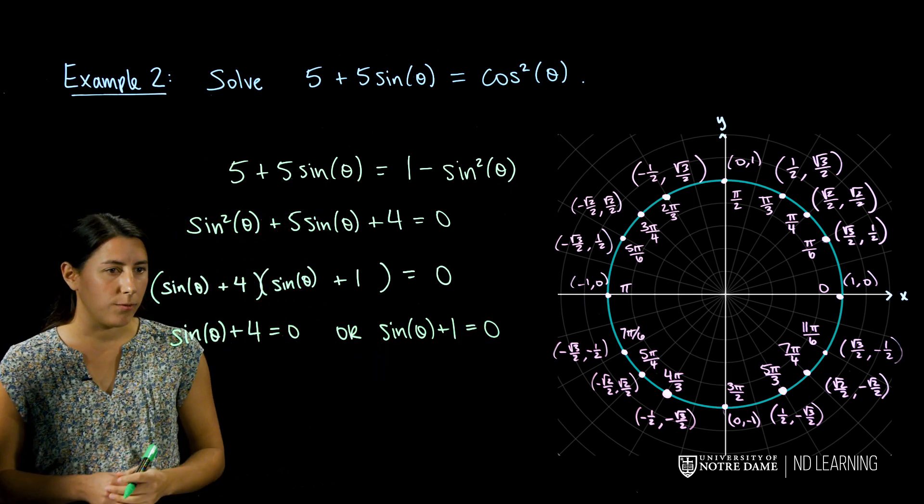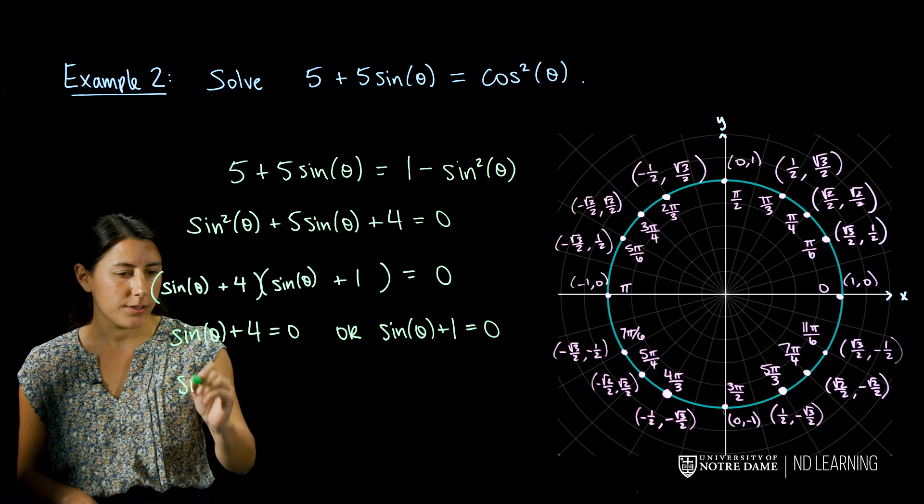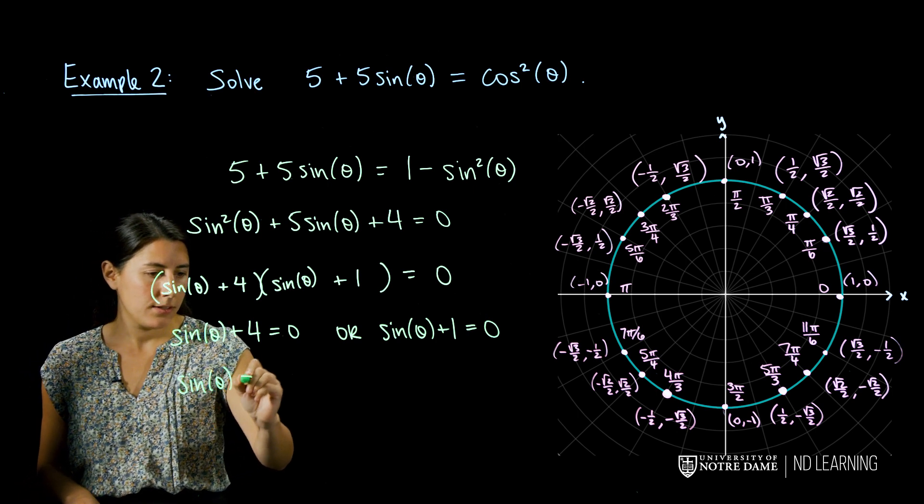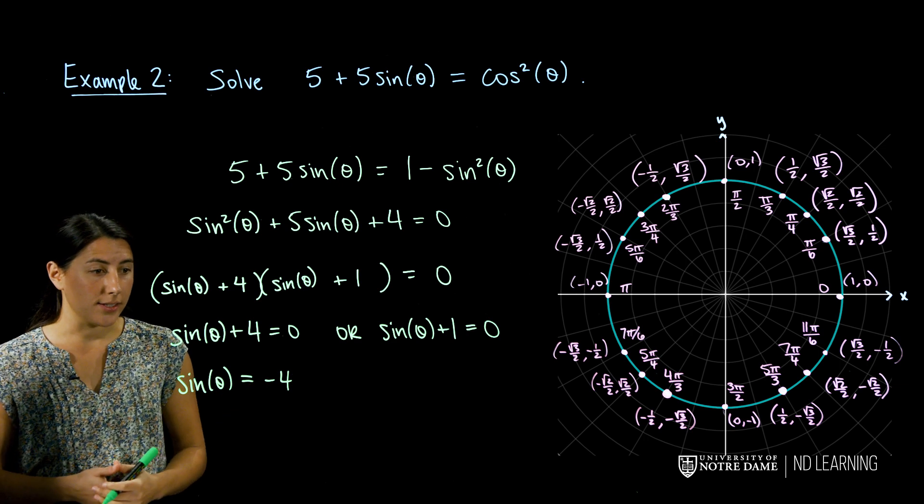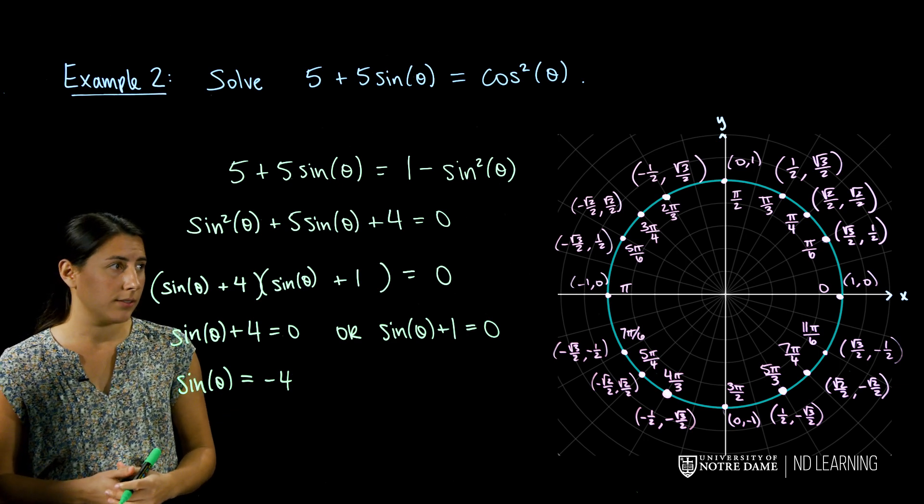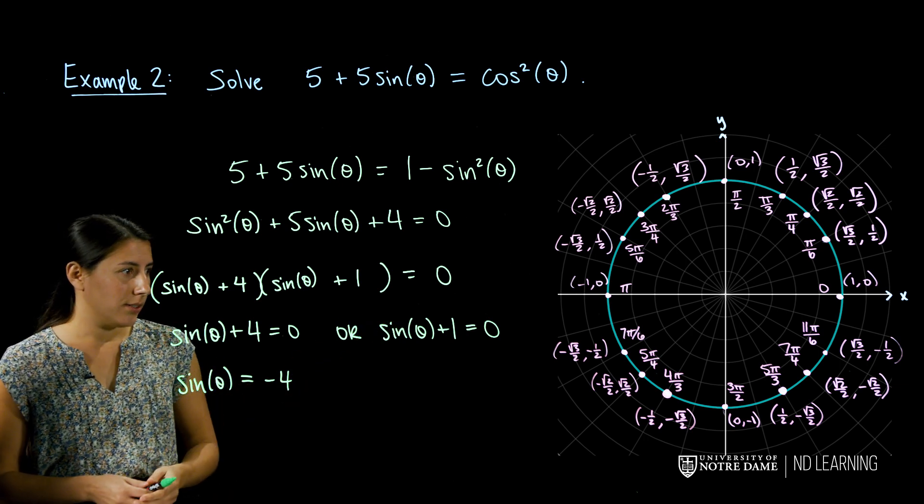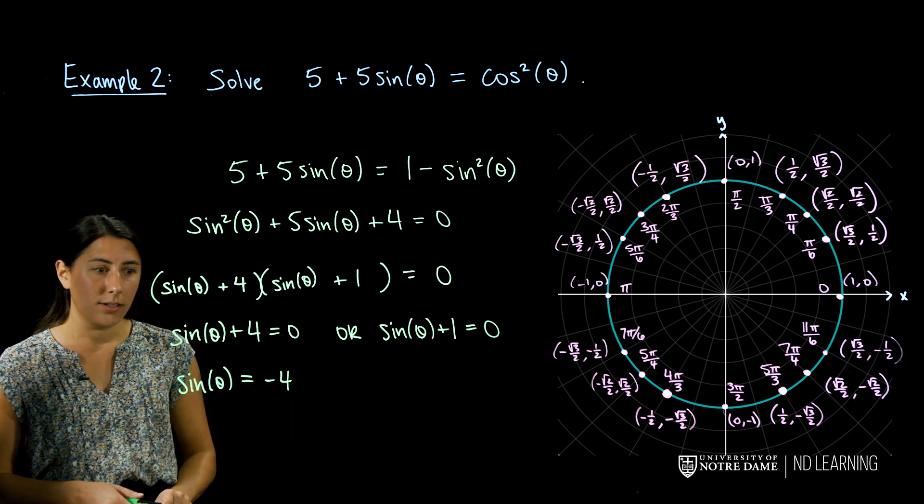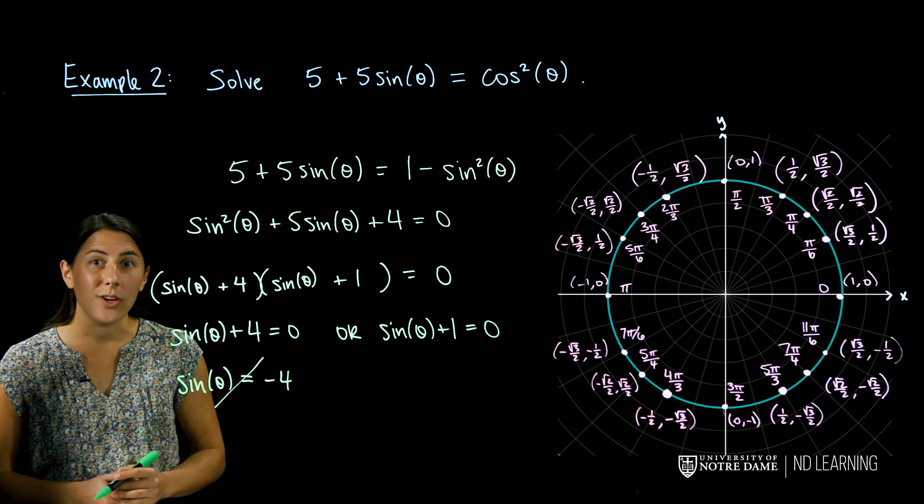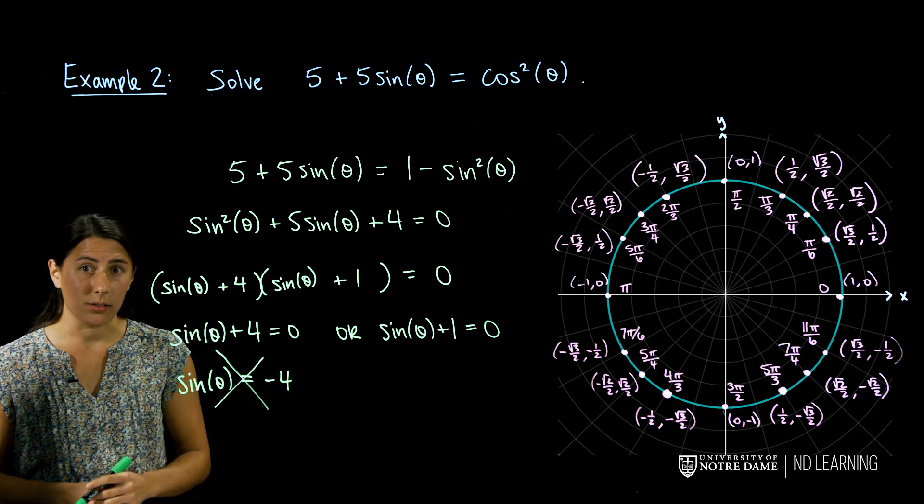So let's look at this one for a minute. So if I solve for sine theta, we're asking what angles theta does sine have value negative 4? Now looking at the unit circle, sine doesn't have any values that are less than negative 1. So there are no angles theta that satisfy this equation.